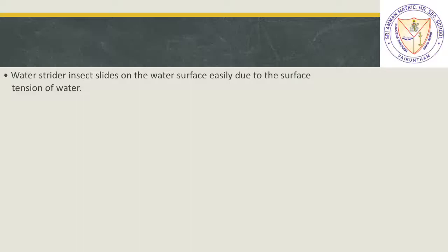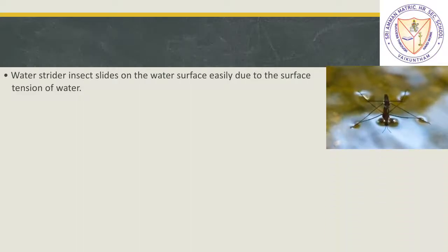Water strider — an insect that slides on water surface easily — does so due to the surface tension of water. This is very easy for that insect because there is some surface tension. If there were no surface tension, the insect would have sunk in the water. Because of the presence of surface tension, this insect can easily float or move on the surface of the water.